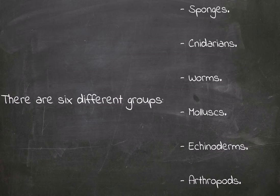There are six different groups: sponges, cnidarians, worms, molluscs, echinoderms, and finally, arthropods.